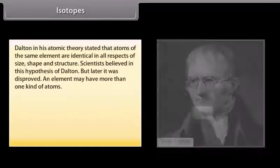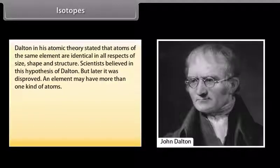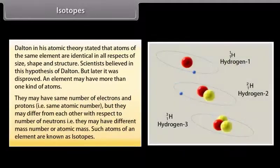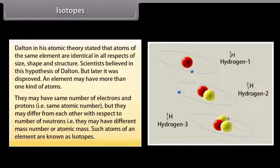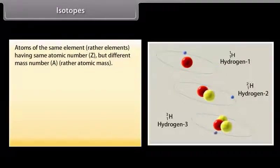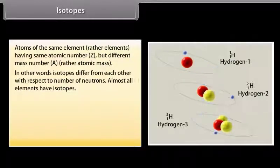Isotopes: Dalton in his atomic theory stated that atoms of the same element are identical in all respects of size, shape and structure. Scientists believed this hypothesis but later it was disproved. An element may have more than one kind of atom — they may have the same number of electrons and protons (same atomic number) but differ with respect to the number of neutrons (different mass number or atomic mass). Such atoms of an element are known as isotopes. Isotopes are atoms of the same element having the same atomic number Z but different mass number A. In other words, isotopes differ from each other with respect to number of neutrons. Almost all elements have isotopes.